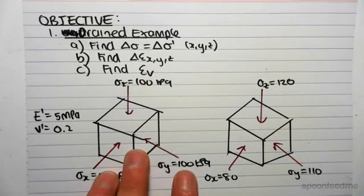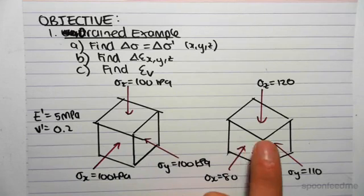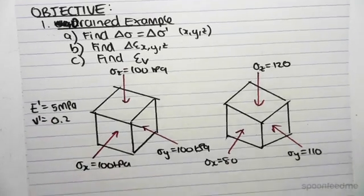It's the exact same cube specimen where we've got 100 kPa on all faces, and then the change to new values. We have an E' of 5 MPa and a ν' of 0.2. So as always,